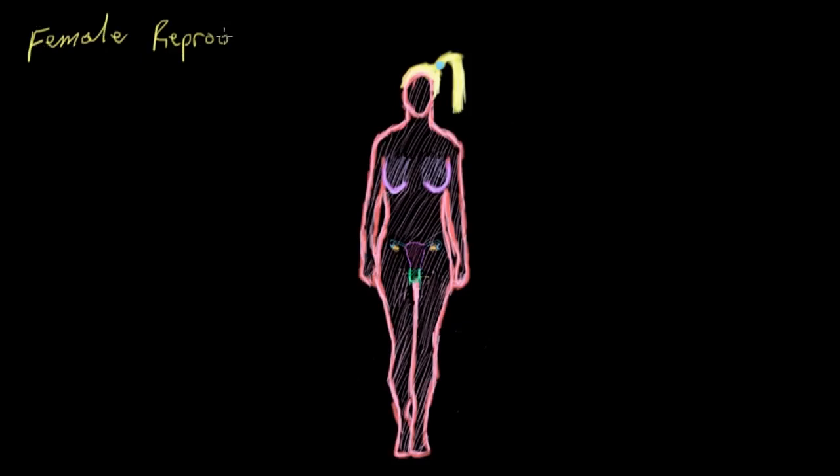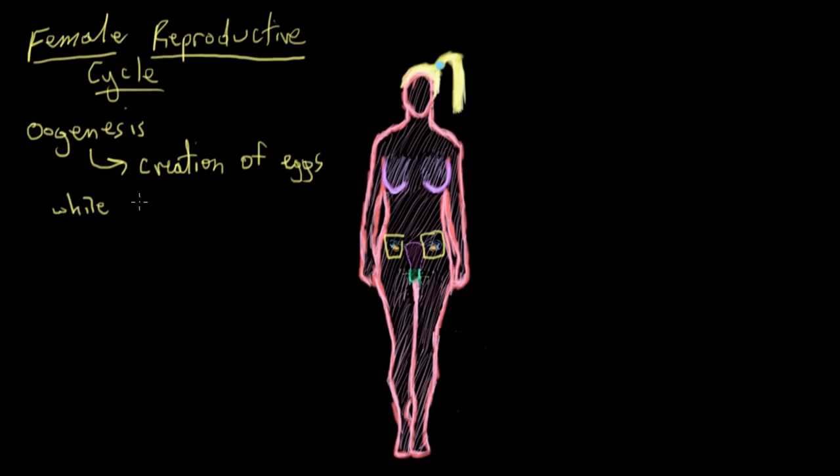The female reproductive cycle refers to the maturation of eggs within the ovaries. The ovaries initially created these eggs during gestation — in other words, when a baby girl is in her mother's womb, her entire egg supply will be created but will remain in an inactive state. This process of egg creation is called oogenesis.